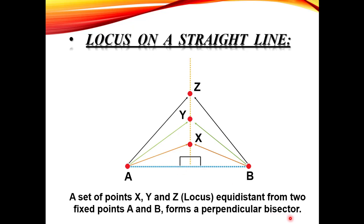दूसरा Word है Bisector। Intersect और Bisect में फ़र्क है: Intersect तब कहते हैं जब दो Lines कहीं से भी कट करें — ज़रूरी नहीं Middle से। लेकिन Bisect का Word इस्तेमाल होता है जब हम किसी Line या Angle को दो Equal Halves में Divide करें। So, the bisect word is used when we divide a line or angle into two equal halves.